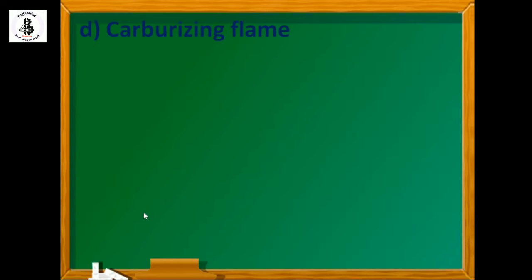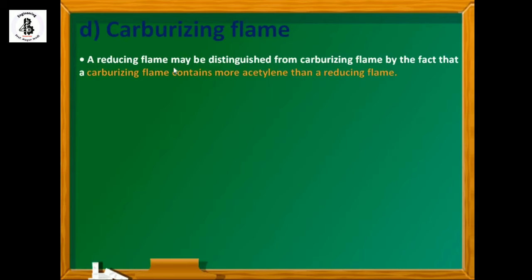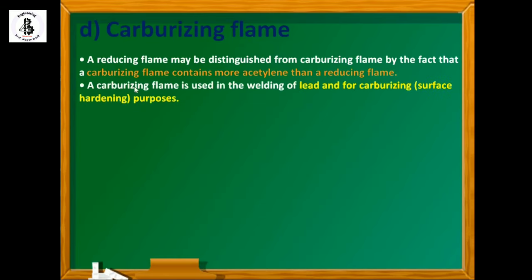Now we will discuss carburizing flame. A reducing flame may be distinguished from carburizing flame by the fact that a carburizing flame contains more acetylene than a reducing flame. A carburizing flame is used in the welding of lead and for carburizing or surface hardening process.